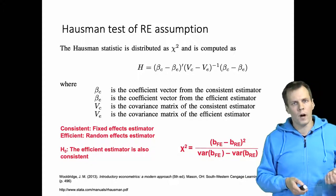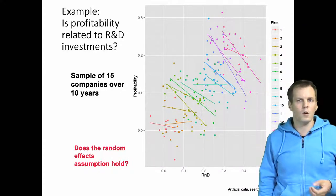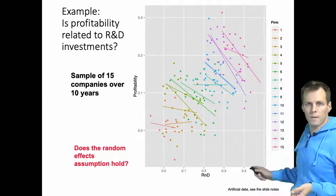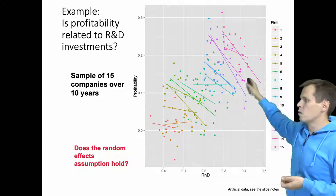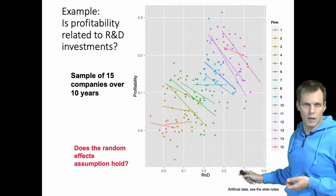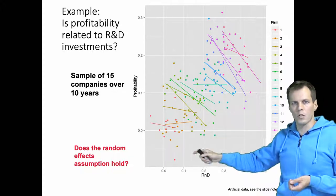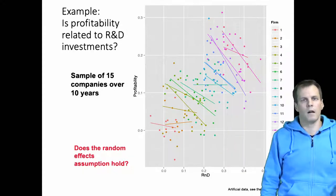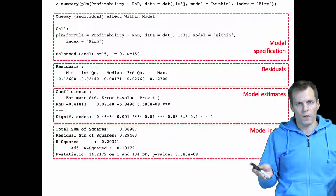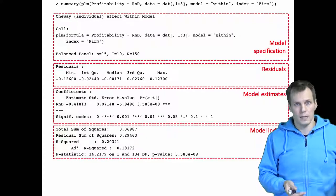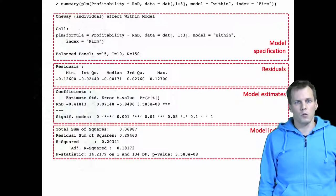Let's look at an example of how the Hausman test is calculated using the same dataset as before. We have 15 different firms each observed 10 times, and we run a regression analysis for each firm separately. The effect of R&D on profitability is negative at the within-firm level and positive at the between-firm level, so the random effects assumption doesn't hold because the within and between effects differ.